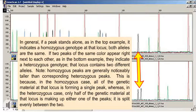Note, homozygous peaks are generally noticeably taller than corresponding heterozygous peaks. This is because, in the homozygous case, all of the genetic material at that locus is forming a single peak, whereas in the heterozygous case, only half of the genetic material at that locus is making up either one of the peaks. It is split evenly between the two.